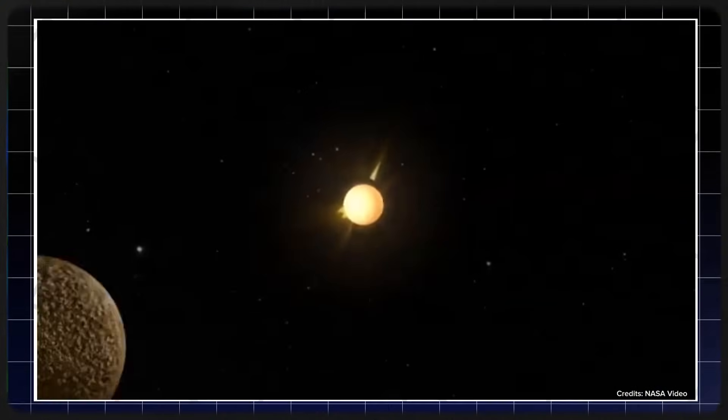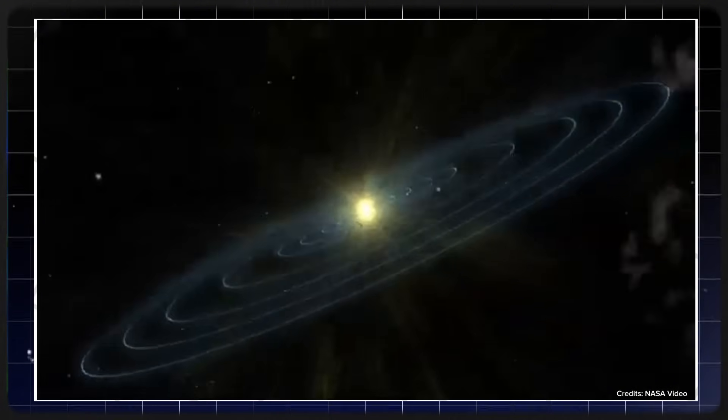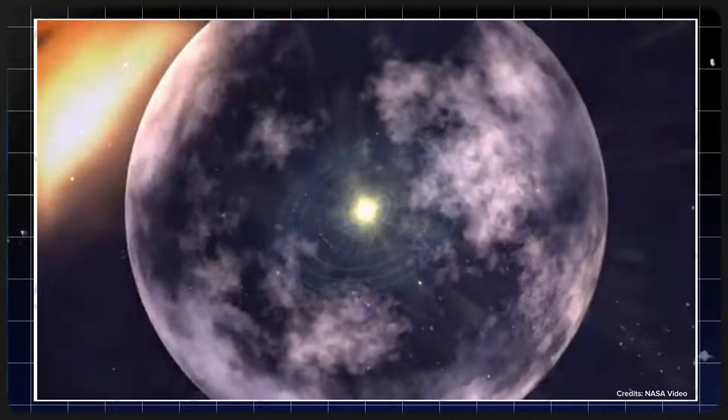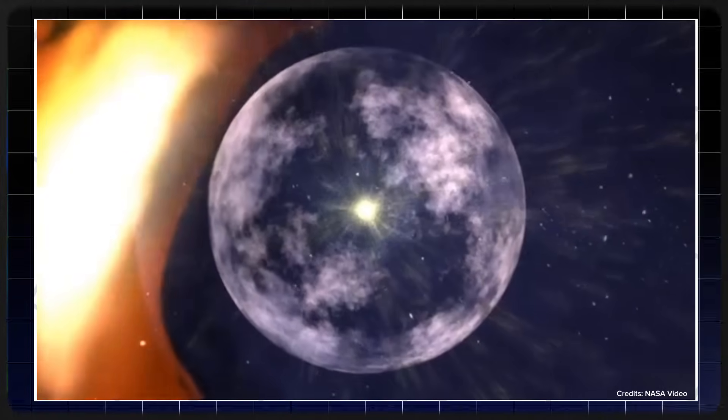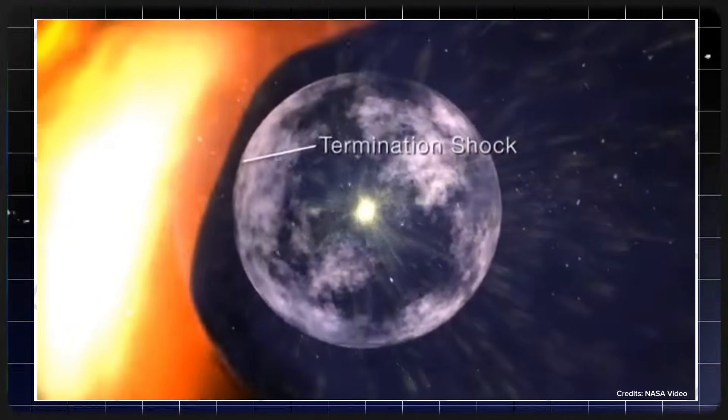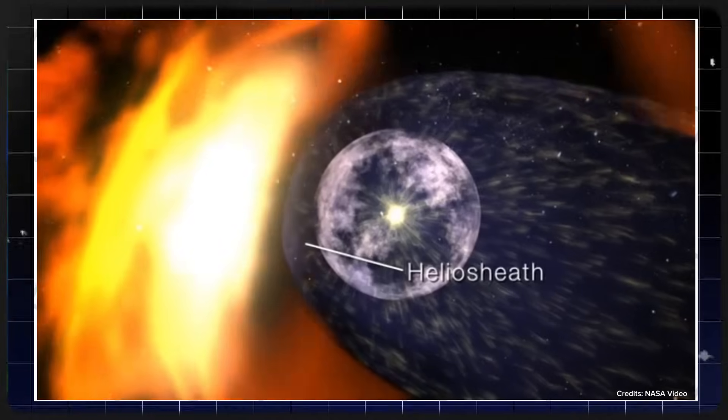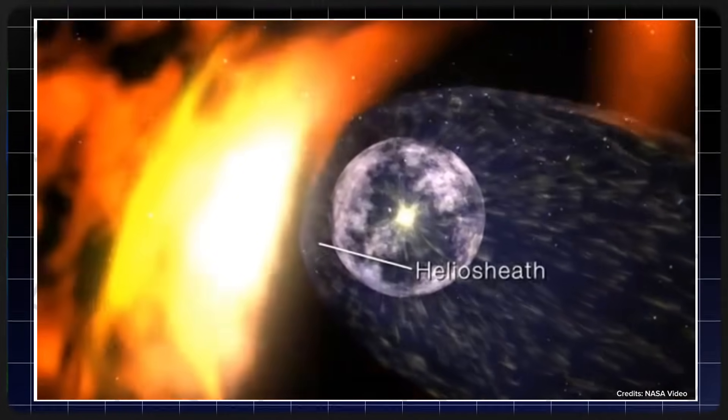In August 2012, it crossed the heliopause, the point where the sun's influence ends, becoming the first human-made object to enter interstellar space. This achievement marks one of humanity's most extraordinary milestones, pushing the boundaries of our exploration into the cosmos.